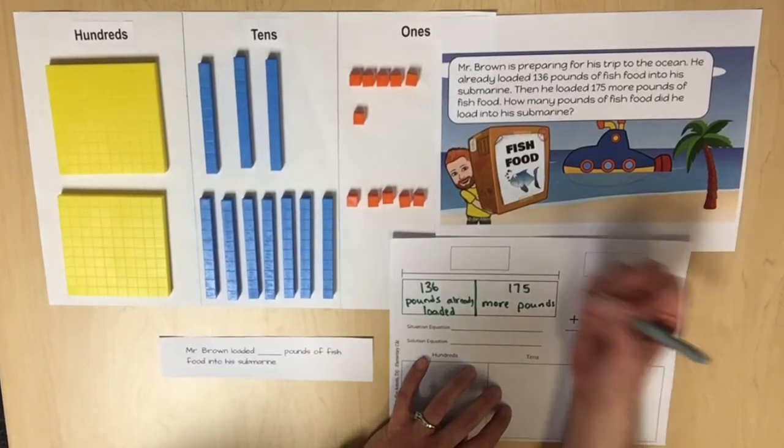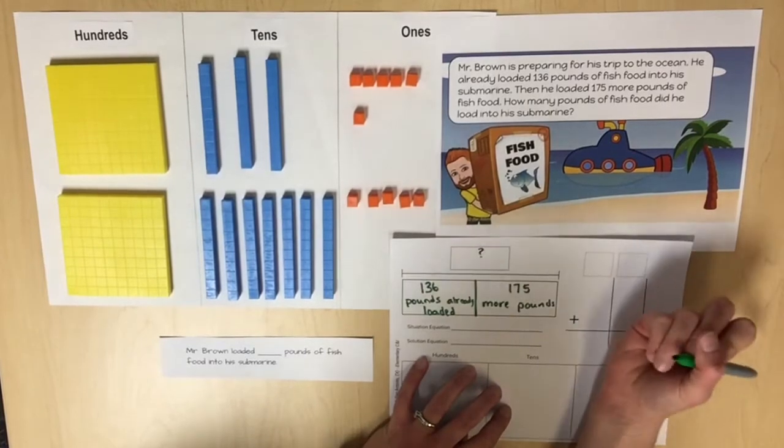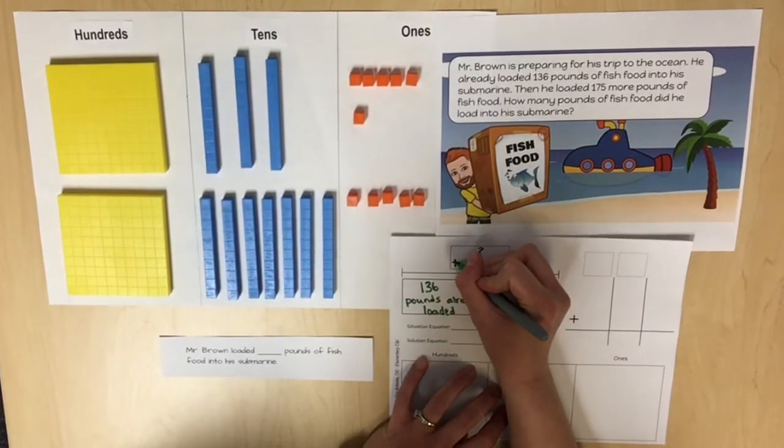Then he loaded 175 more pounds of fish food. We need to determine our unknown, which is the total pounds that are loaded on the submarine.